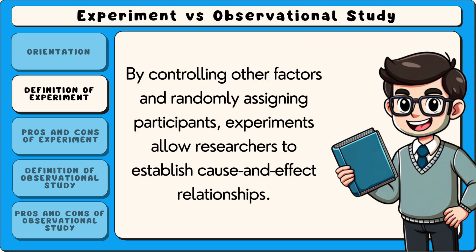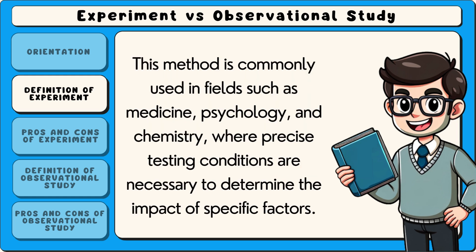By controlling other factors and randomly assigning participants, experiments allow researchers to establish cause and effect relationships. This method is commonly used in fields such as medicine, psychology, and chemistry, where precise testing conditions are necessary to determine the impact of specific factors.